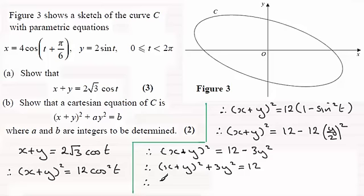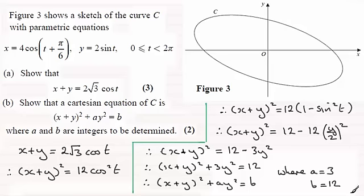So I can see that this is identical to (x + y)² + ay² = b, where a and b are constants. I can finish off by saying that a is clearly 3 and b equals 12.